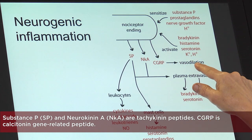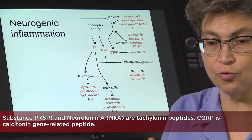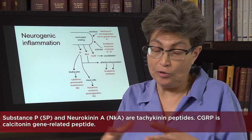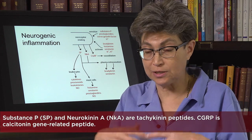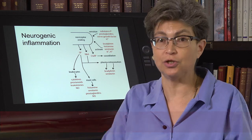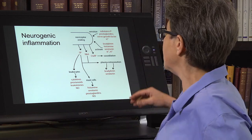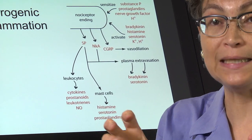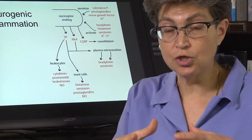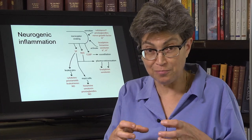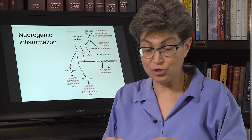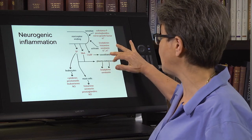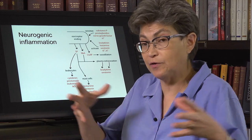CGRP produces vasodilation — it acts on peripheral blood vessels to dilate them, which makes the area red, just as vasodilation from heat makes your skin look red. Substance P and neurokinin A act on the blood vessel lining to make it leaky — they cause plasma extravasation, so the plasma inside the blood vessels has access to get outside. This produces swelling, and the combined effect makes the area hot, with blood both inside and outside the blood vessels.